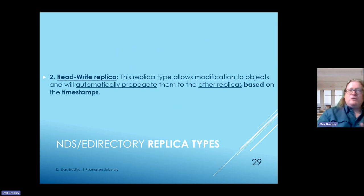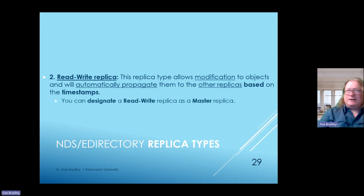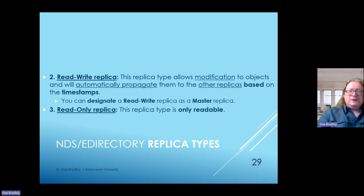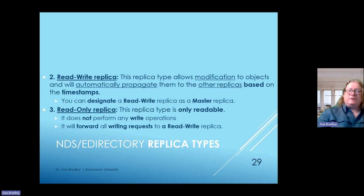Second, the read-write replica allows modifications to objects and automatically propagates them to other replicas based on timestamps—and you can designate any read-write replica as a master. Third, there's the read-only replica, which is only readable and doesn't perform any write operations; it forwards all write requests to a read-write replica, and it can also be designated as a master replica.